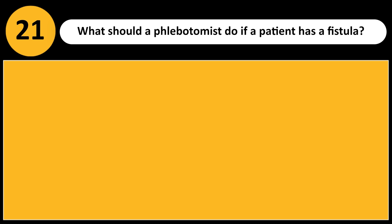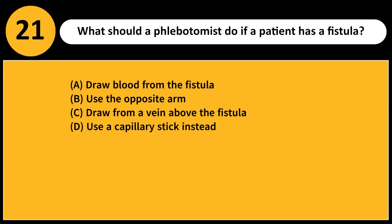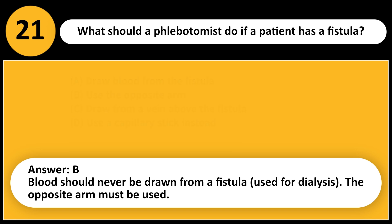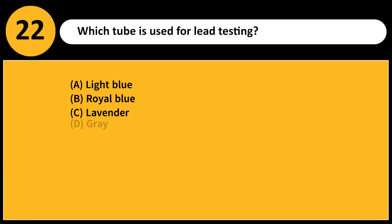What should a phlebotomist do if a patient has a fistula? A. Draw blood from the fistula. B. Use the opposite arm. C. Draw from a vein above the fistula. D. Use a capillary stick instead. Answer: B. Blood should never be drawn from a fistula used for dialysis. The opposite arm must be used.